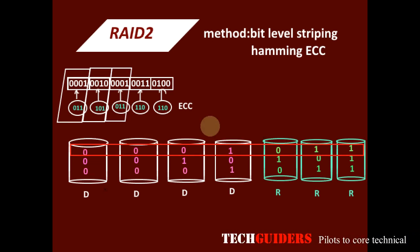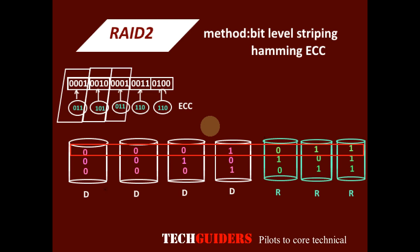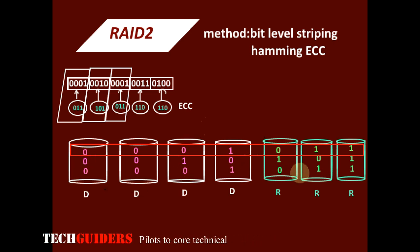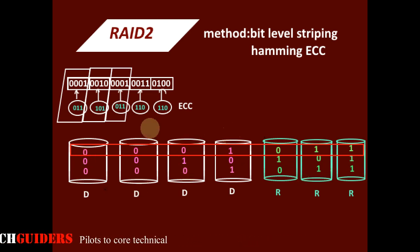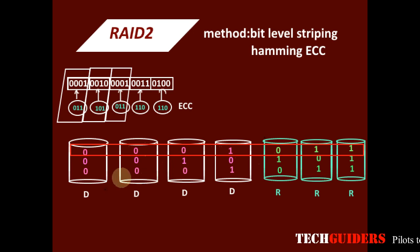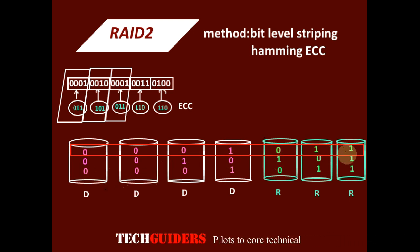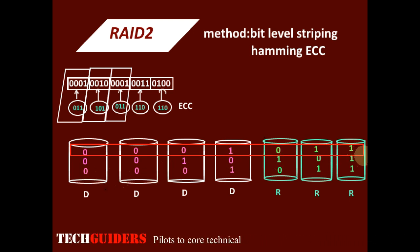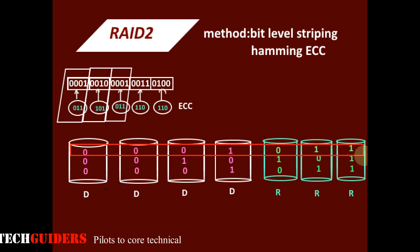Regarding performance, even though we use striping for parallelism, the long Hamming code generation is a drawback. Also, since striping is at bit level, for every read or write access almost all the disks will be involved, so handling multiple requests simultaneously is not possible.